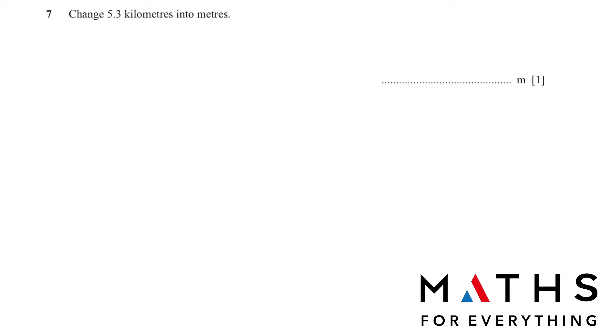Number 7. Change 5.3 kilometers into meters. A very easy question. You just need to know that you need to multiply from kilometer to meters. You need to multiply by 1000. This will give you 5,300 meters.